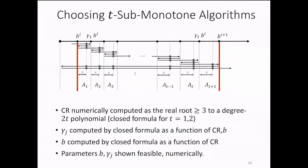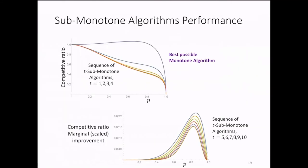Overall, the proposed parameters for our T sub-monotone algorithms are computed numerically as roots to polynomials of degree 2 times T. On the other hand, for T equals 1 and 2, that is for one sub-monotone and two sub-monotone algorithms, we do obtain closed formulas for our results. But for every T three or more, the performance I report here was computed numerically.